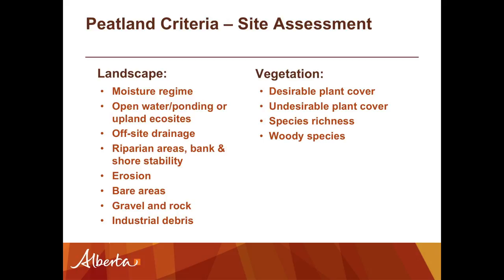Getting the water table right is critical, so that's part of the landscape assessment. We're looking for open water, ponding, or upland eco-sites, both of which are not conducive to peat formation. We're also looking at off-site drainage, which is tied into the water regime on the site itself, plus the standard things like erosion and bare areas. For the vegetation assessment, we're really focusing on whether we have desirable peat-forming species and whether we have the wrong kind of species. It's that whole peat-forming function we're focusing on.